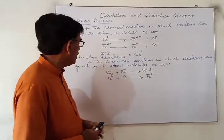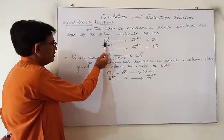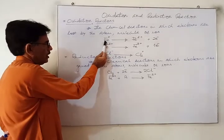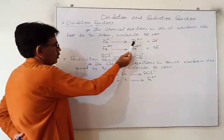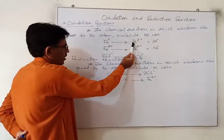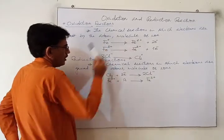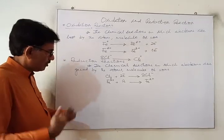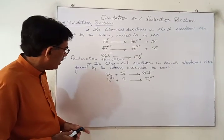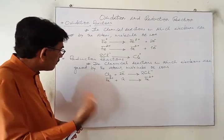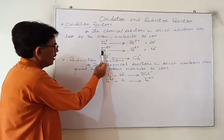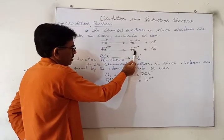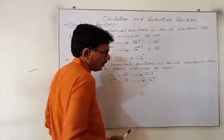In the first example, we have an iron atom which can lose two electrons in the first phase and it will be converted into ferrous ion. And if with a certain reagent it is further reacted, it is converted from ferrous to ferric ion, meaning we have a further loss of electron.